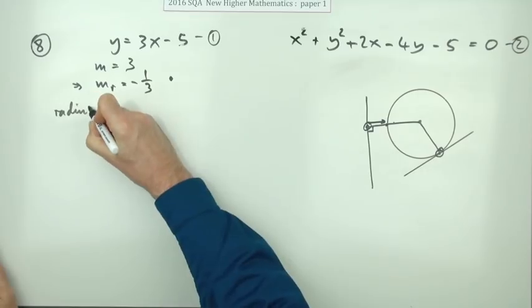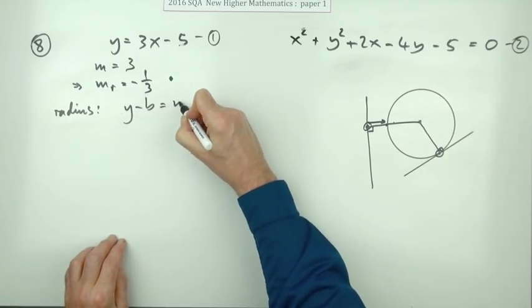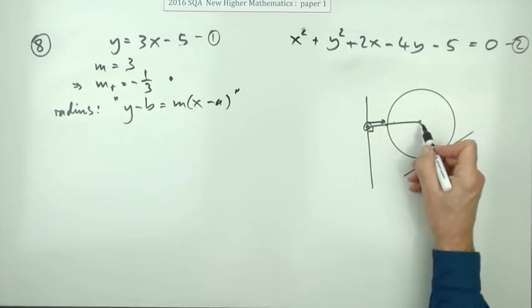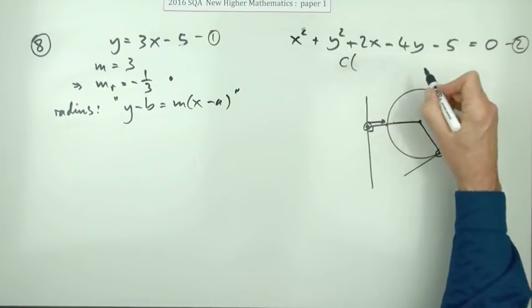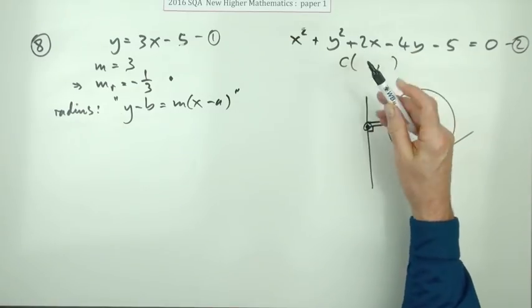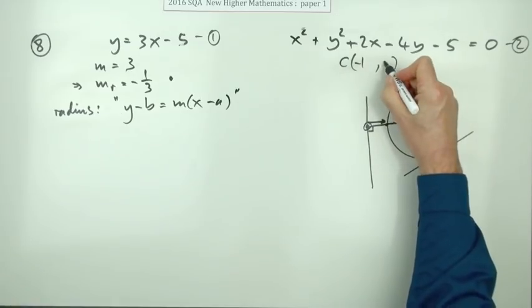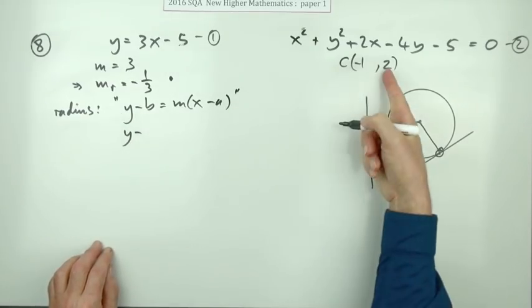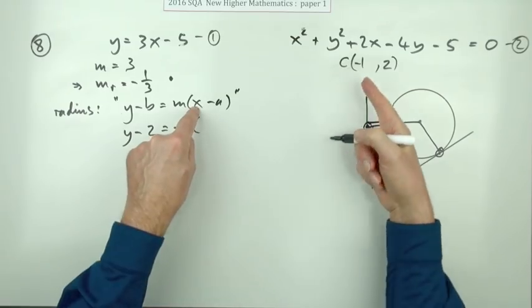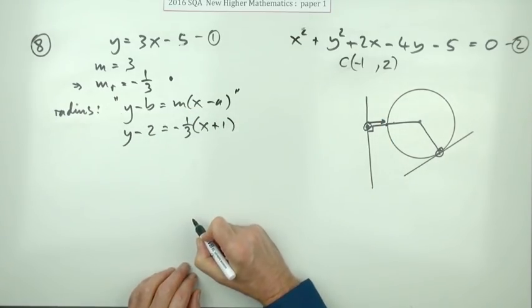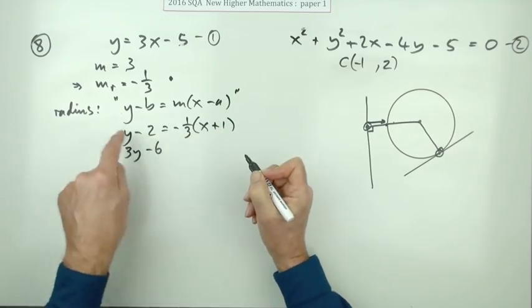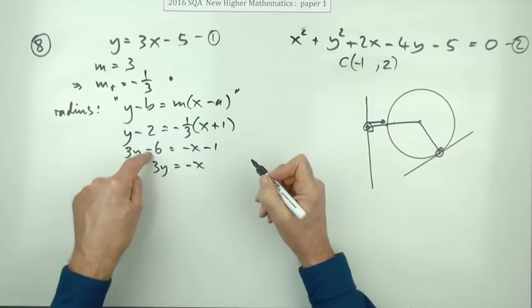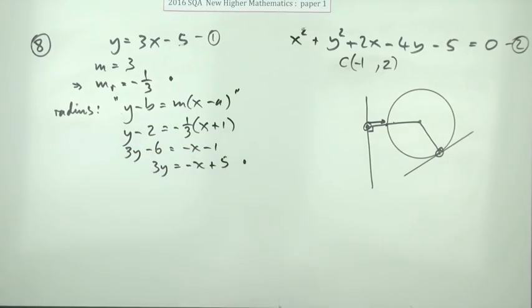So what's the equation of this radius then? Well, you'll be using y minus b equals mx minus a. Now, you know the gradient of it. The point on it will be the centre of the circle. So what is the centre of the circle? You can pick it out quite easily. It's half of those numbers with the opposite sign. Negative 1, 2. Now that's not the second mark yet. You need to find that. But you also have to put it into here. So, y minus the y coordinate is negative a third of x minus the x coordinate. I'll just jump in with plus 1. Then multiplying that out. 3y minus 6 equals, keeping the negative with this side, negative x minus 1. So, 3y equals negative x, take across that as plus 6, plus 5. Now you get the second mark.